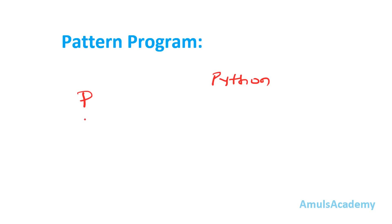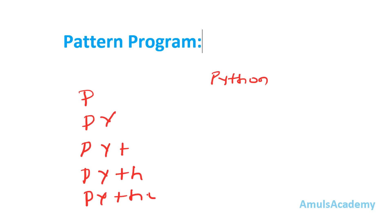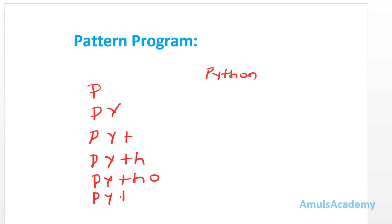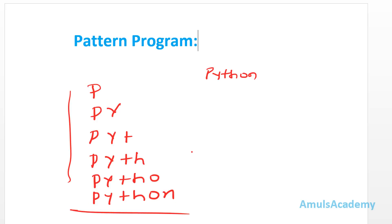The first line will show 'P', next 'PY', then 'PYT', next 'PYTH', then 'PYTHO', and finally 'PYTHON'. So here we can see we are printing the string characters in a right triangle shape.